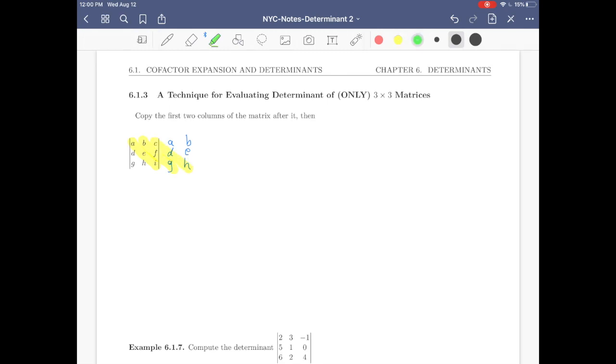And then you will have three kind of main diagonals. One right here, one right here, one right here. And also you have three non-main diagonals right here. And then what you do is you multiply these elements. This one is A, E, I. This one is B, F, G. This one is C, D, H. And you add them. And also on top, you multiply G, E, C. H, F, A. I, D, B.